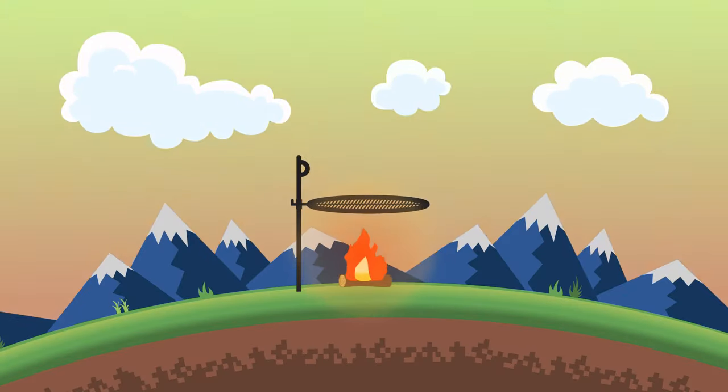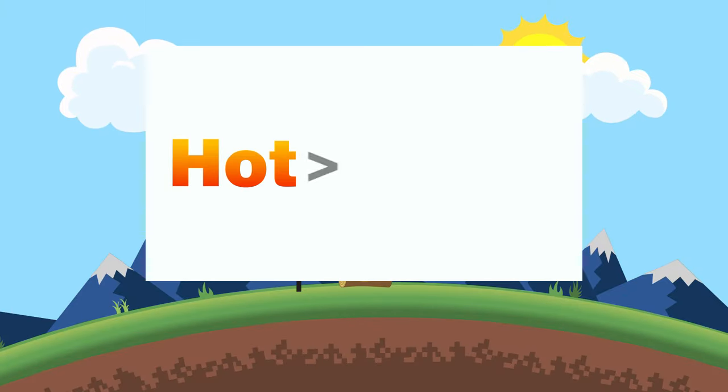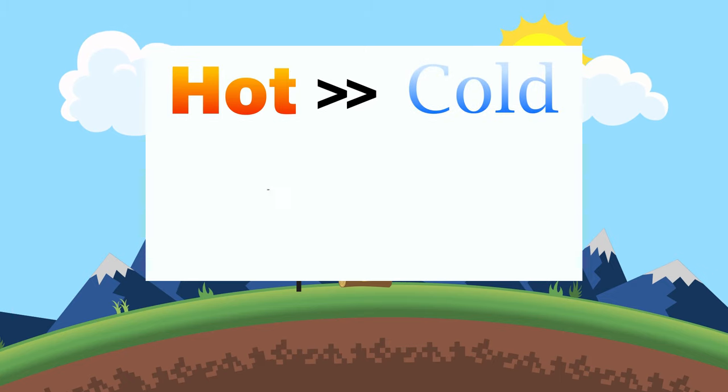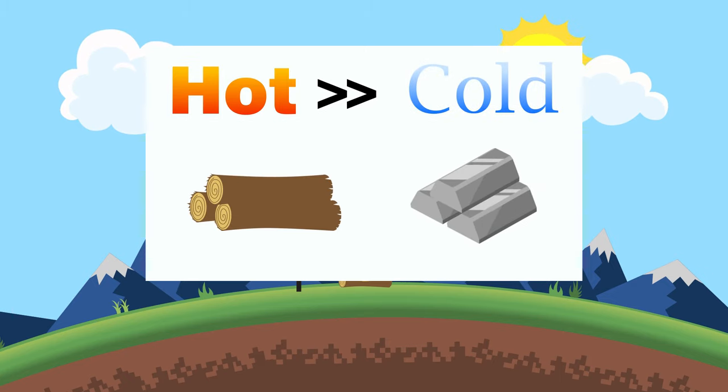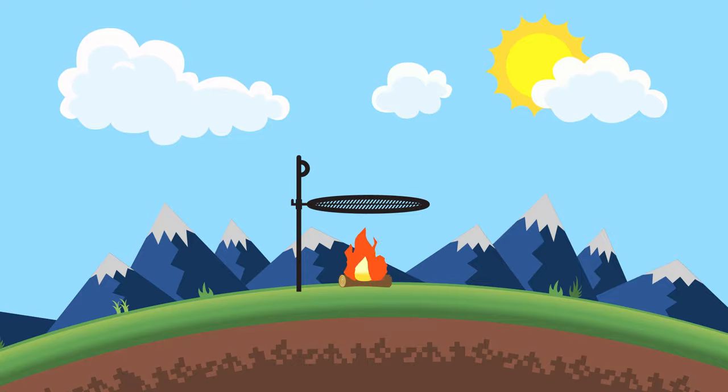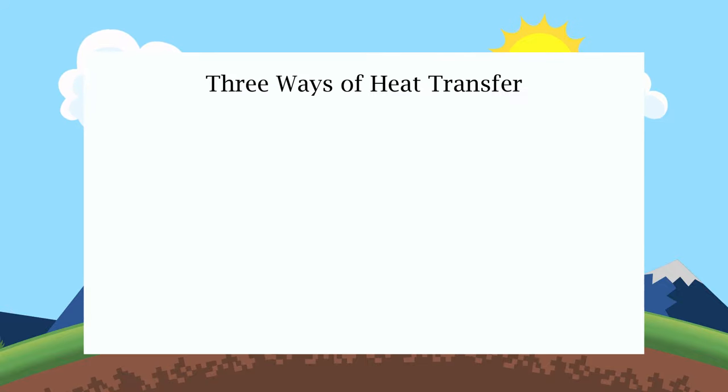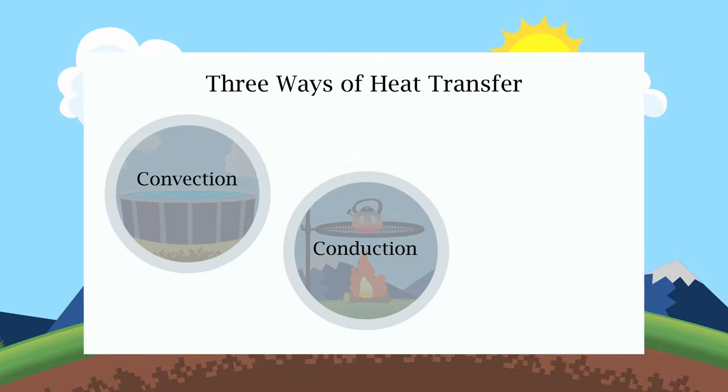Heat transfer happens to us all the time every day. It always moves from hot objects to colder ones and is impacted by some materials more than others. In this lesson you'll explore three ways heat transfers in our environment: conduction, convection, and radiation.